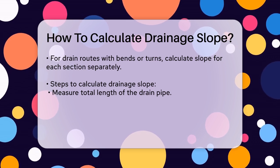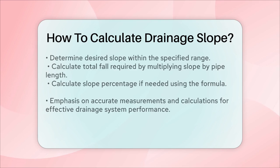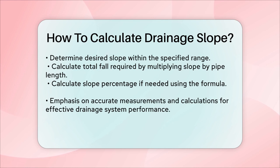To simplify the process further, here are the steps you can follow: Measure the total length of the drain pipe. Determine the desired slope within the allowed range, ¼ inch to 3 inches per foot. Calculate the total fall required by multiplying the slope by the length of the pipe. If necessary, calculate the slope percentage using the formula PS = PF ÷ PL × 100.